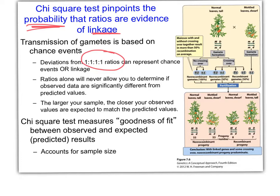If your numbers aren't exactly 1:1:1:1, does that mean they're linked, or is that just by chance? We talked about probability with small sample sizes — with a very small sample size you can get 10 heads in a row, so the bigger your sample size the more you can trust the data. We use the chi-square test to tell us statistically whether it's chance or because genes are linked — it's a goodness of fit.